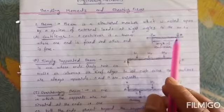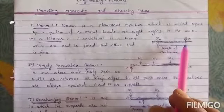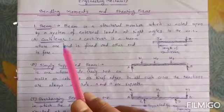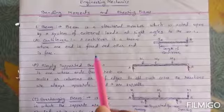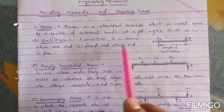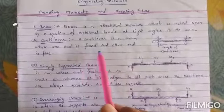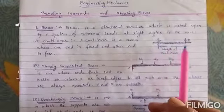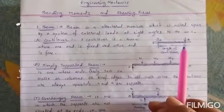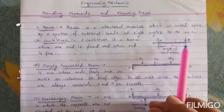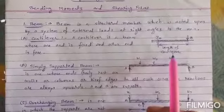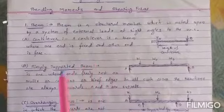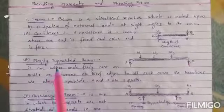This is the beam type. First is the cantilever beam. A cantilever beam is a beam whose one end is fixed and the other end is free. Here, part A is fixed, the second side is B. There is a vertically downward load, and this is the length of the cantilever. The left side is fixed and the other end is free.